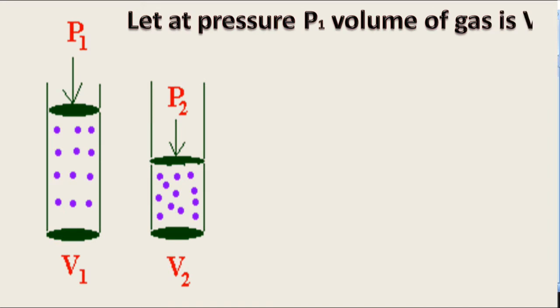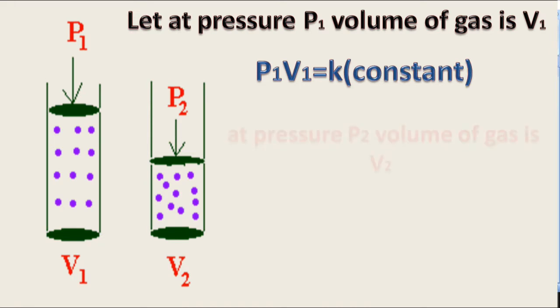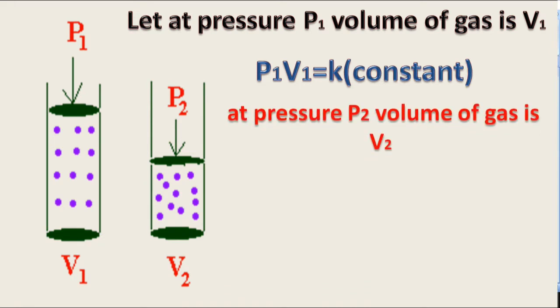Let at pressure P1, volume of gas is V1. Therefore, P1V1 is equal to constant. At pressure P2, volume of gas is V2. Therefore, P2V2 is equal to constant.